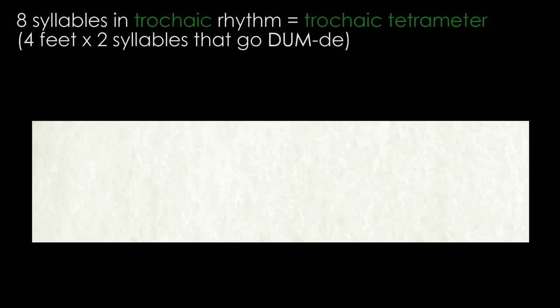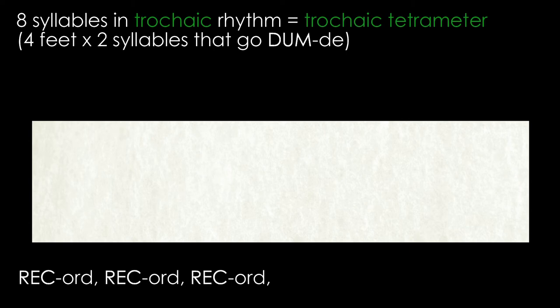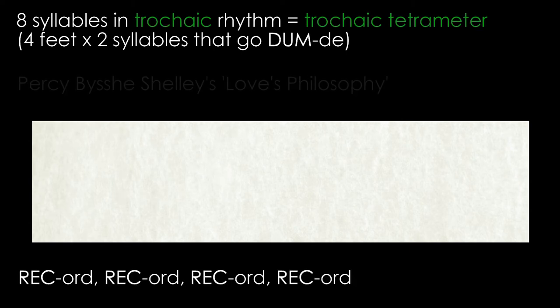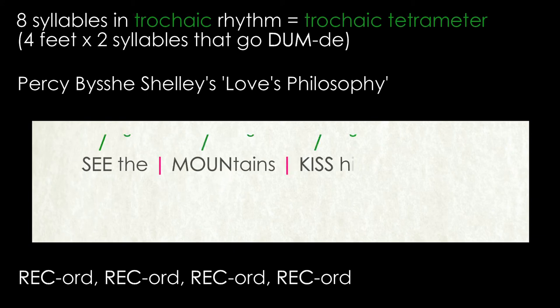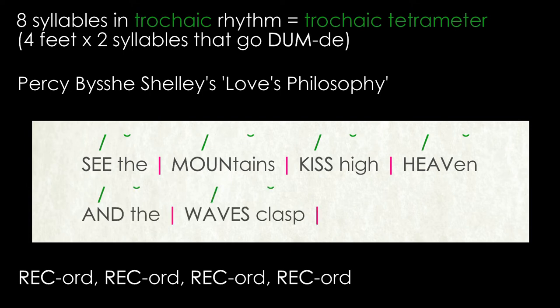A line of eight syllables written in trochaic rhythm is called trochaic tetrameter. There are four feet of two syllables each which go dum-di. These lines have the same rhythm as if you were to say 'record, record, record, record.' Percy Bysshe Shelley uses a base metre of trochaic tetrameter in his poem Love's Philosophy, although he varies this substantially. The first two lines of the third stanza are written in regular trochaic tetrameter: 'See the mountains kiss high heaven and the waves clasp one another.'